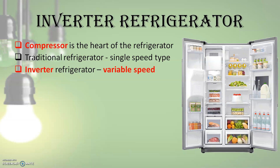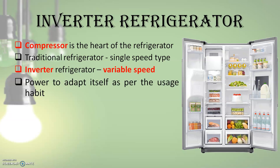The inverter compressor can operate at various speeds, and at low speeds it runs in a longer cycle. Both traditional and inverter compressors cycle on and off, but the inverter compressor takes longer at lower speed. The inverter compressor can adapt itself as per the usage habits of the consumer. For example, if you are loading items in the fridge with the door open longer, the compressor will sense this and start operating at higher speeds to compensate for the loss of cold air and the entry of warm air.